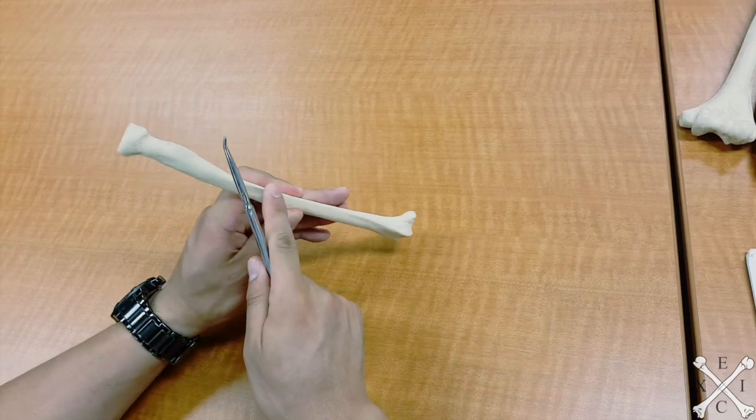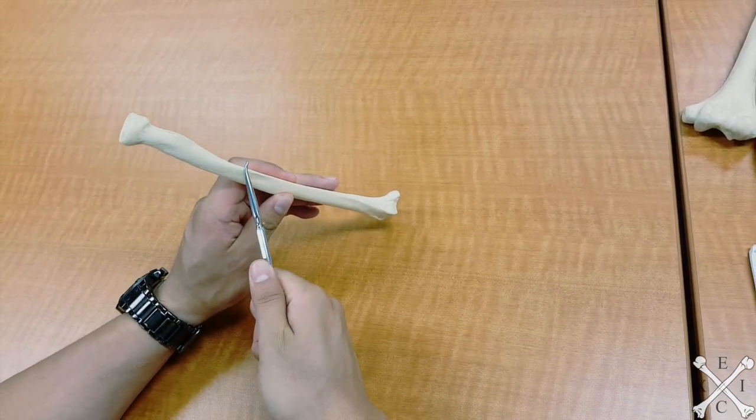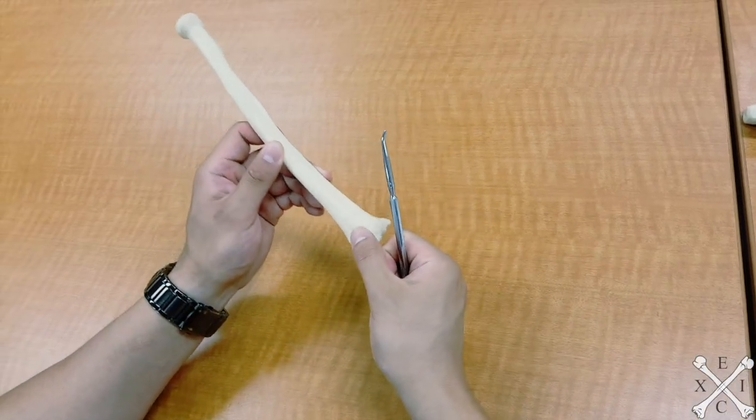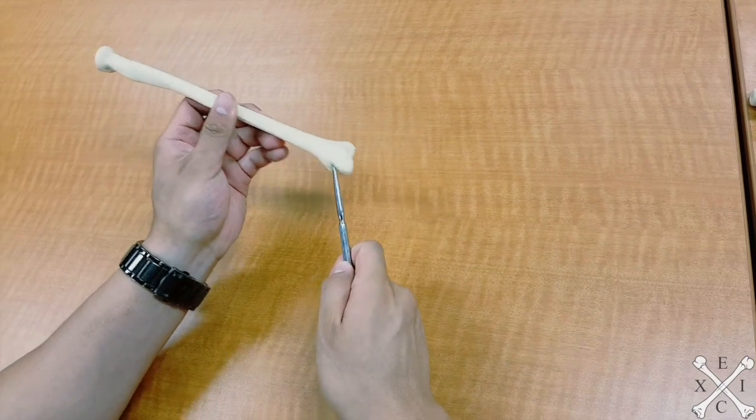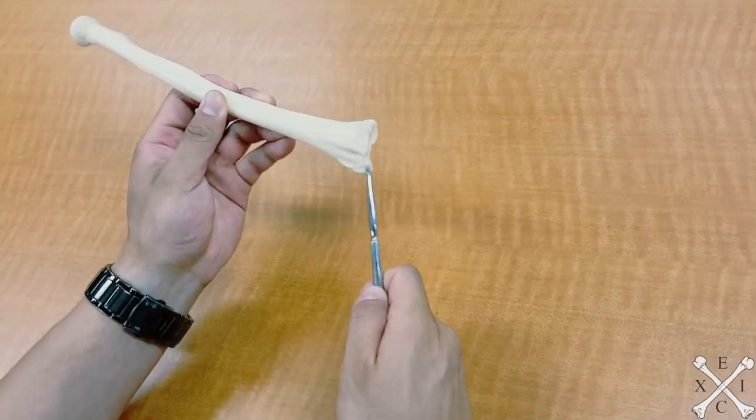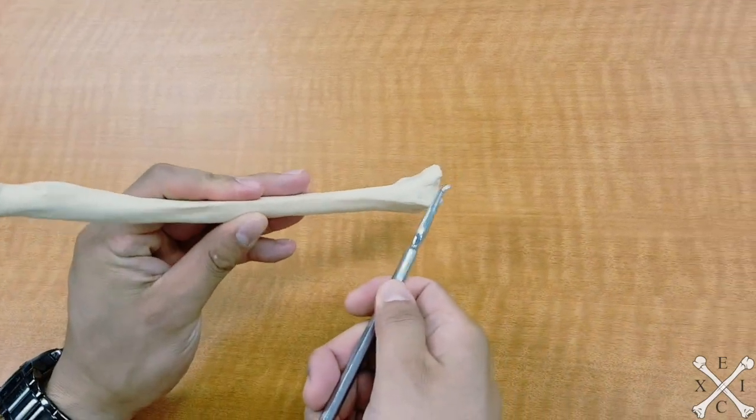Right here this is your interosseous margin or border. We have the dorsal tubercle which is this part right here. The styloid process, as mentioned before, is right here. It's this prominent point right here, and then we have the ulnar notch which is right there.